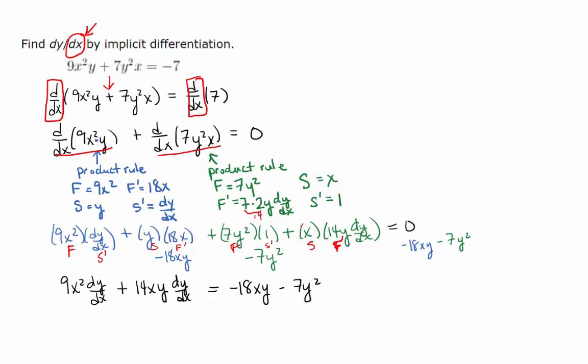And then from there, we need to simplify. And when we simplify, here, we just have 9x squared dy dx. I moved any terms that didn't have a dy dx, I moved them over to the other side. So you'll see that I moved up 18xy, so it's going to become negative 18xy on the other side. 7y squared is going to become negative 7y squared on the other side. And then here we have the 14xy.